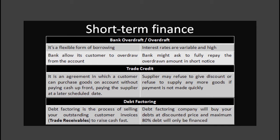Next is debt factoring. Most businesses in the retail sector insist on cash payment for sales. Most other businesses sell their goods to customers on credit terms. These customers become debtors and are shown in the statement of financial position as trade receivables. The longer the period a business gives customers to pay, the greater the amount of finance it needs from other sources to meet day-to-day expenses and short term debts. One solution is to sell the debts to a debt factoring company, which buys the debt for a discounted amount, providing the business with immediate cash. The debt factoring company gains a profit as it will receive the full payment from the customer.